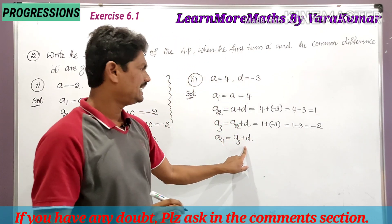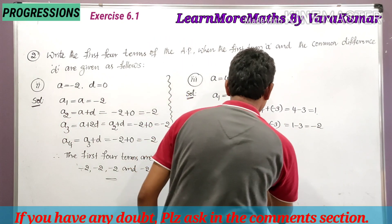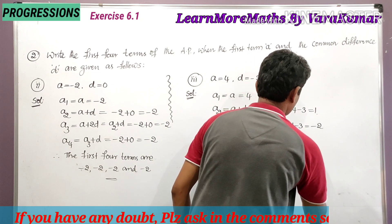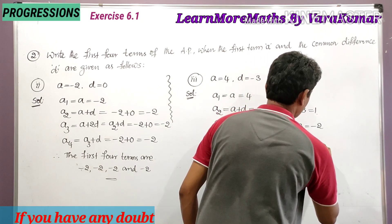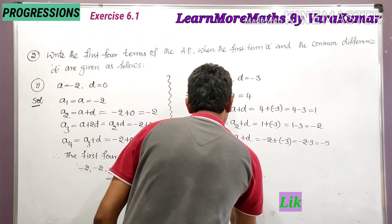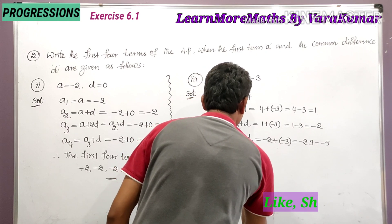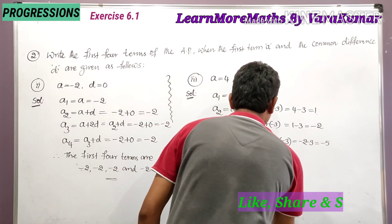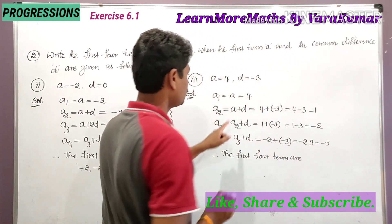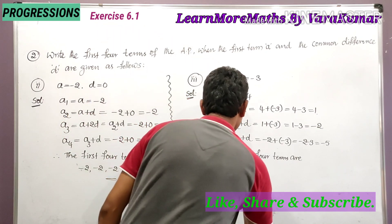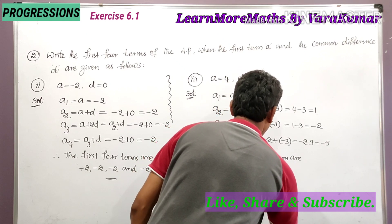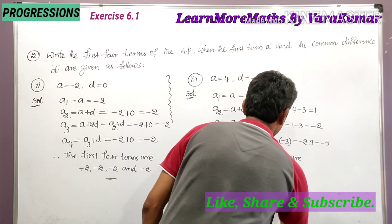The fourth term a4 is equal to a3 plus d, so minus 2 plus minus 3, which is minus 2 minus 3, equal to minus 5. Therefore the first four terms are 4, 1, minus 2, and minus 5.